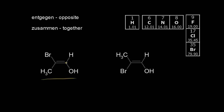Let's start with the carbon on the right side of our double bond. We look at the atoms directly bonded to that carbon — there's a hydrogen and there's an oxygen. Hydrogen has an atomic number of one and oxygen has an atomic number of eight. The higher the atomic number, the higher the priority. So the group that contains oxygen is the higher priority group, and hydrogen would be number two.